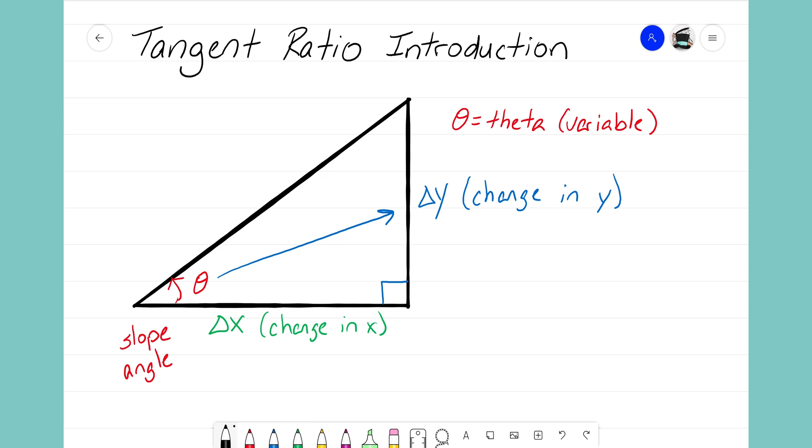Now if I were to ask you what the slope is for this triangle, hopefully we can understand back from Algebra 1 that the slope is just going to be your delta y over your delta x. Rise over run. In this case we're doing delta y over delta x.